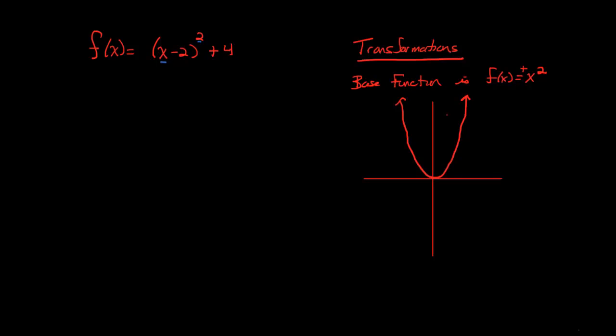It opens up like such because it has a positive leading coefficient. It's a positive x squared, so we know it's going to open up. If it was a negative x squared, it would open down. But if we look at these transformations, hopefully you could recognize immediately that we're going to have a horizontal shift and a vertical shift.